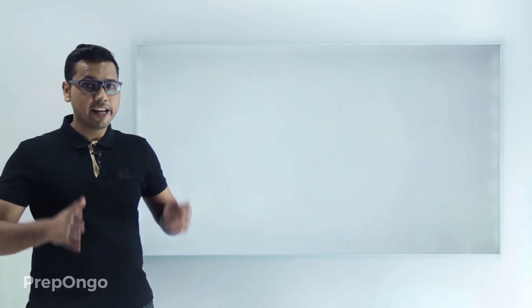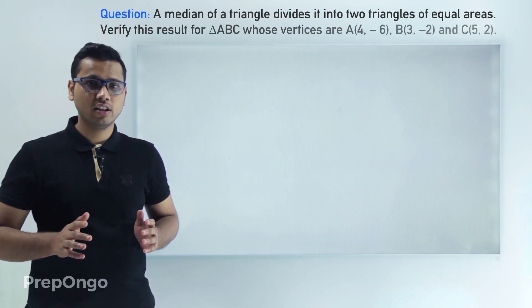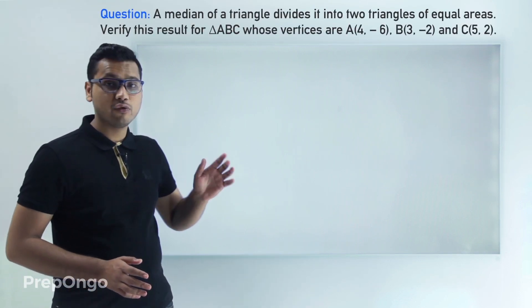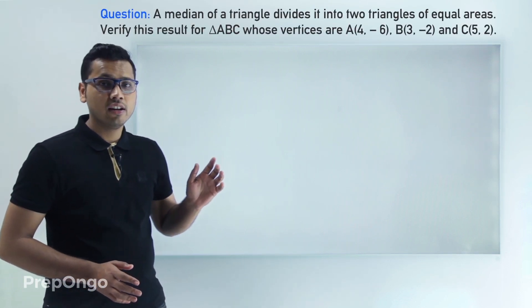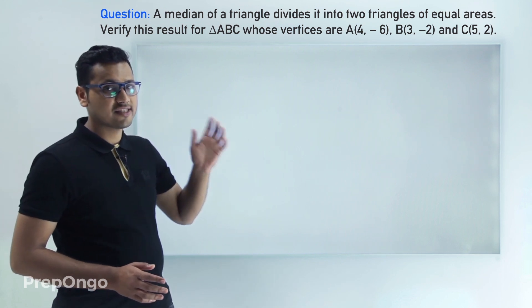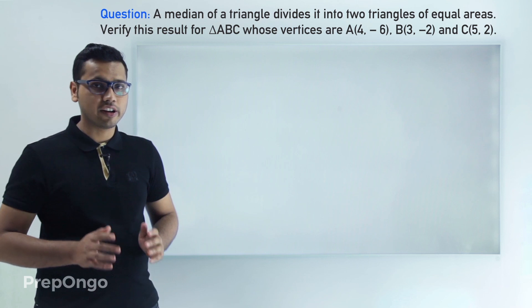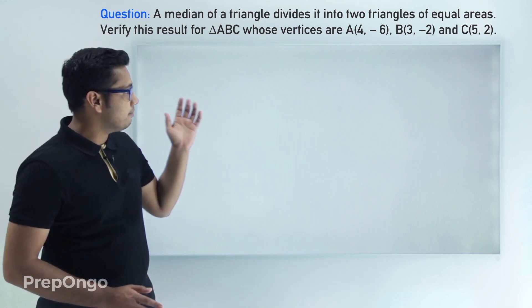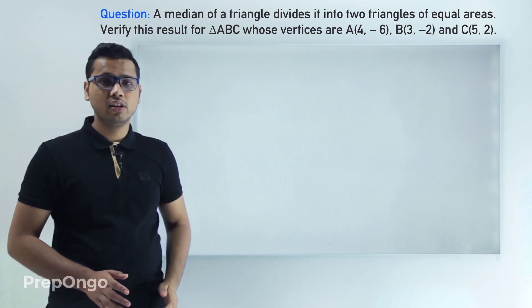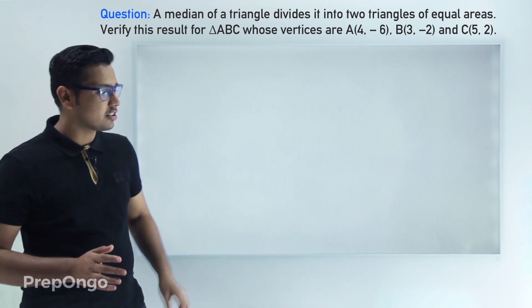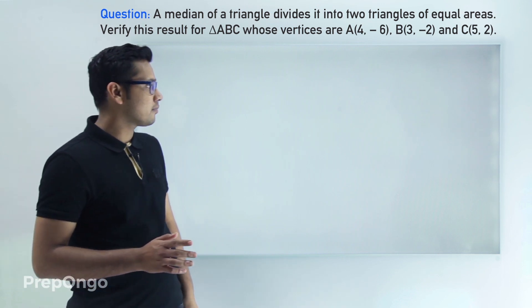Hello everyone. In your earlier classes you might have studied that a median divides a triangle into two triangles of equal areas. In this question we have to verify whether this result is true or not for triangle ABC, whose coordinates are given to us. So let us first draw the triangle.